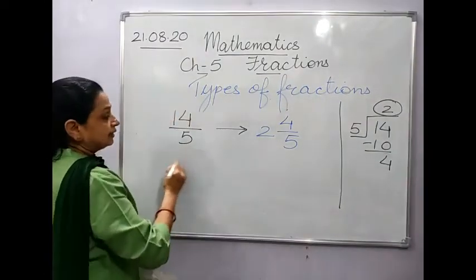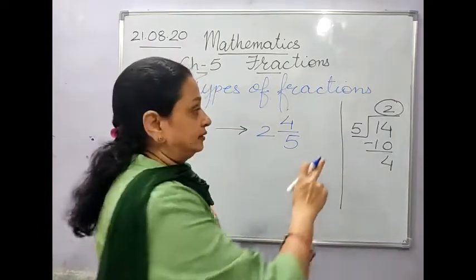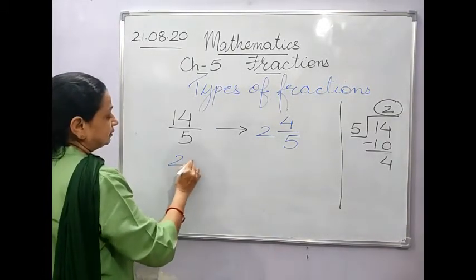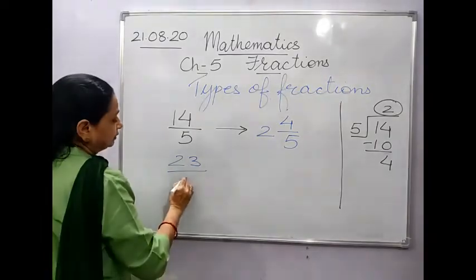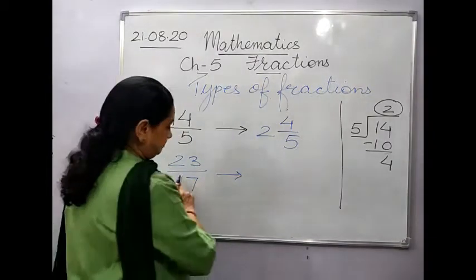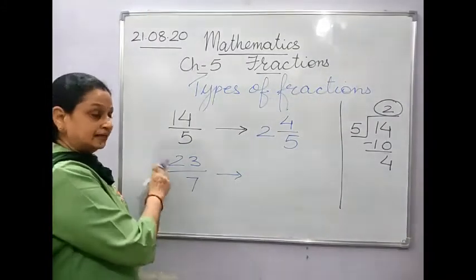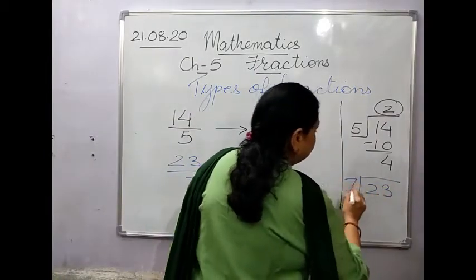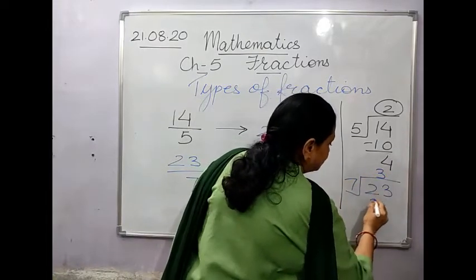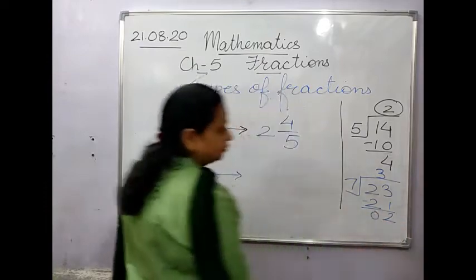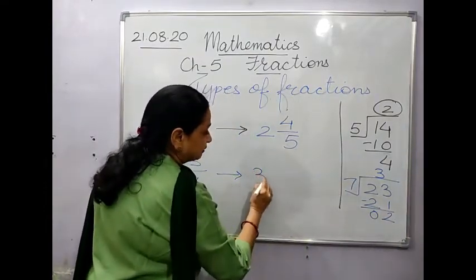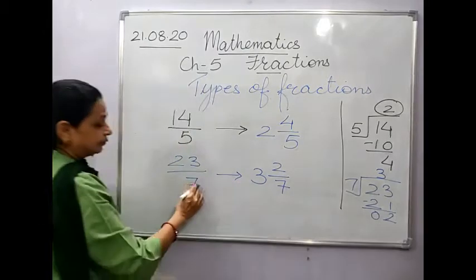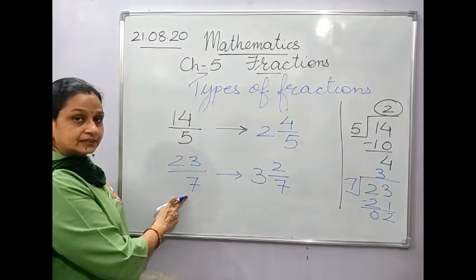Let me take another example: 23/7. The numerator is greater than the denominator, so it is an improper fraction. Solving in rough: 7 threes are 21, remainder is 2. So the quotient 3 becomes the whole number, remainder 2 becomes the numerator, and the divisor 7 becomes the denominator. The answer is 3 and 2/7.